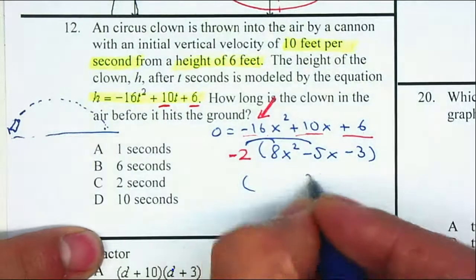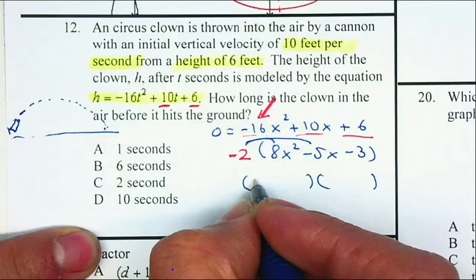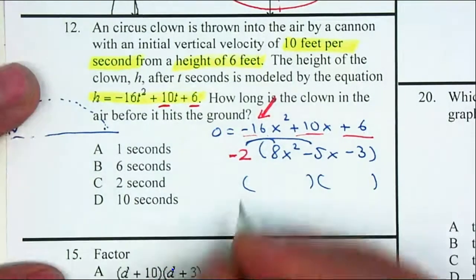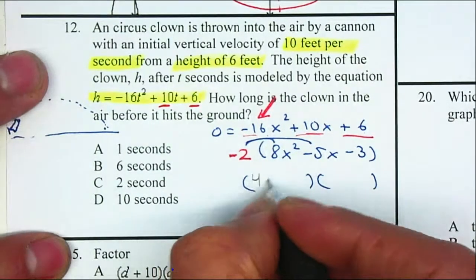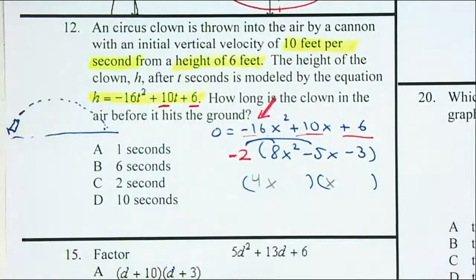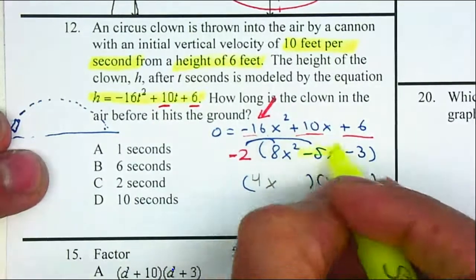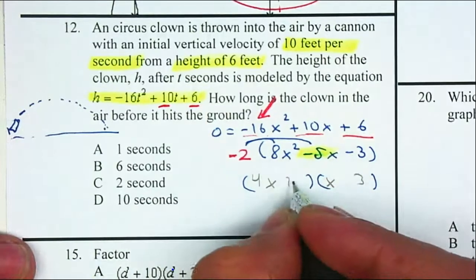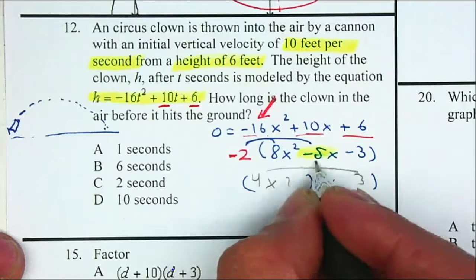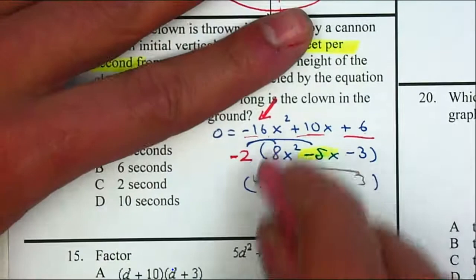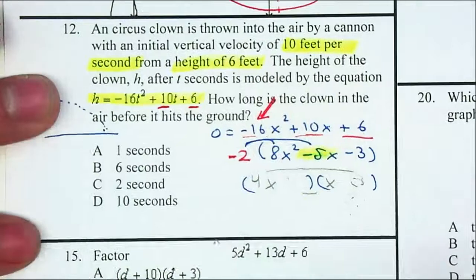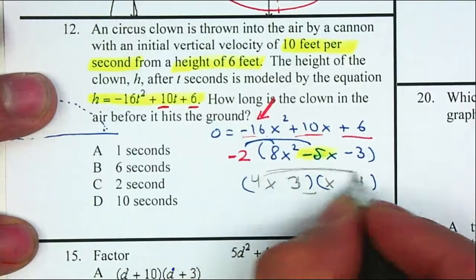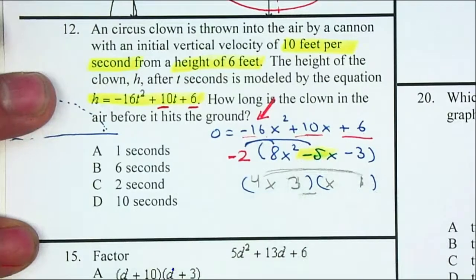Now I'm going to factor what's left. Factors of 8x² can be 4x and 2x, or 8x and x. Let me use 4x and x. Remember, I need to end up with a negative 5. I'm going to use 3 and 1. If I place my 3 here and my 1 here, that's 12 and 1, which will not give me a negative 5. So if I place my 1 here and my 3 here, that's 4 and 3, which will not give me 5 whether I add them or subtract them.